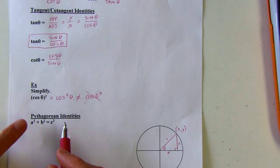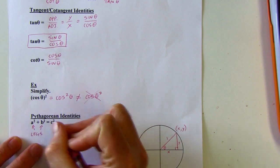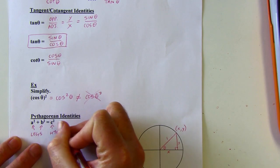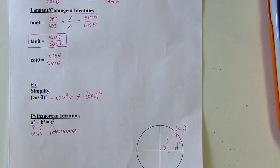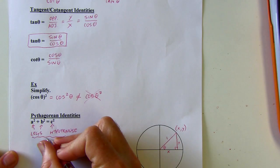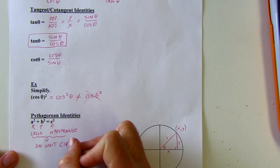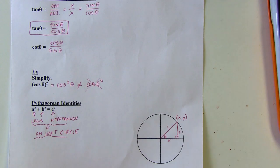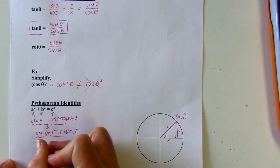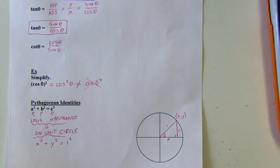Here's the Pythagorean theorem — good for all right triangles. A and B are the legs and C is the hypotenuse. The sum of the squares of the two legs equals the square of the hypotenuse. If we take this and put it on a unit circle, the legs would be x and y, and the hypotenuse is 1, so 1 squared is just 1.